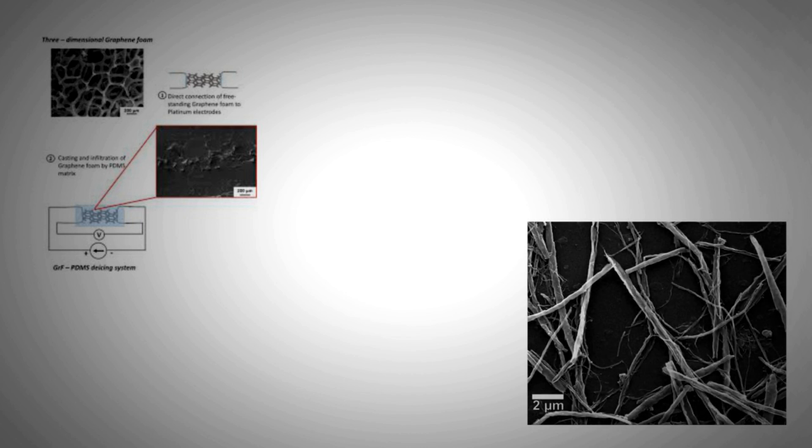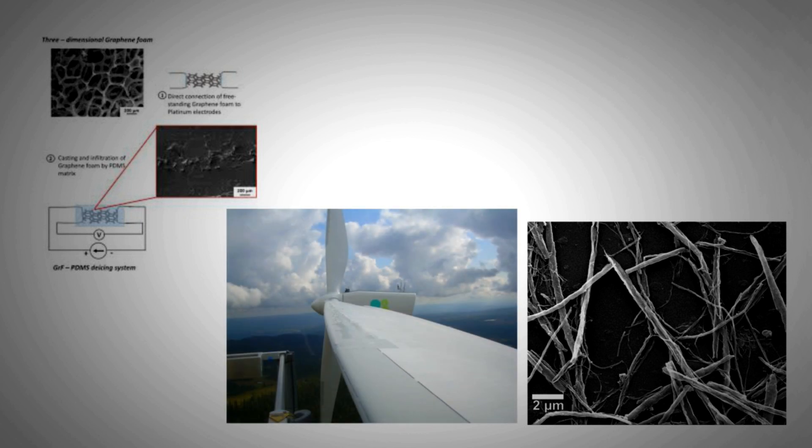A German firm has developed a coating using carbon nanotubes that heat up when current is passed through them. Thus, the blades are de-iced with a simple flick of a switch and can potentially save thousands of dollars by keeping the turbines up and running.